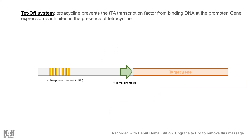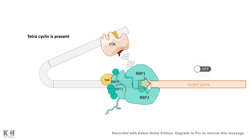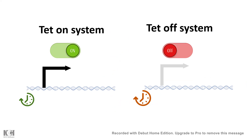There is another system called the Tet-Off system, where adding tetracycline prevents transcription from the downstream gene. Here, the tetracycline transactivator (tTA) — a different protein — can bind to the tetracycline response element. In the presence of tetracycline or doxycycline, it cannot interact with RNA polymerase, and thereby gene expression is turned off. This system is useful where the gene is normally expressed and you want to spatiotemporally shut it down.